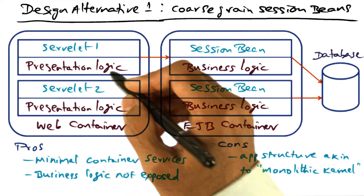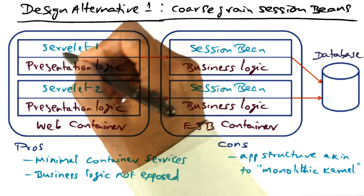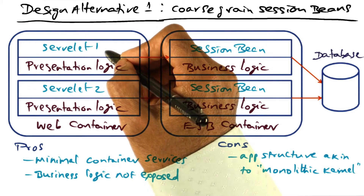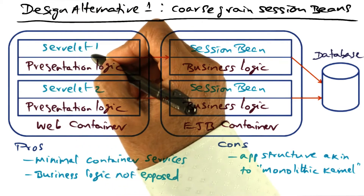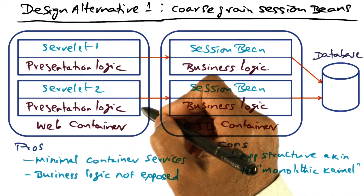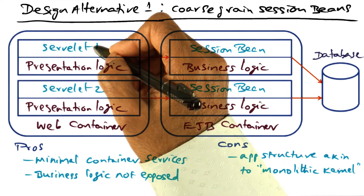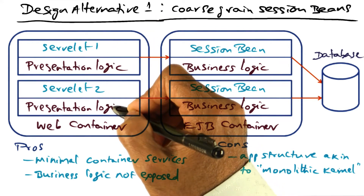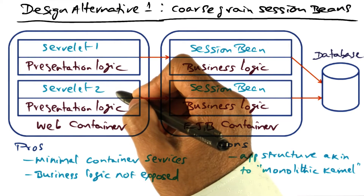The web container contains the presentation logic. In this structure, a servlet corresponds to an individual session with a particular client. This box represents a particular client, this box represents a second client, and there is presentation logic commensurate with servlet one — that is client number one — and similarly, presentation logic commensurate with servlet two, which is client number two.